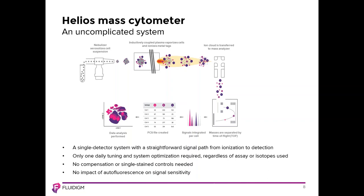Second, there is no impact of autofluorescence on signal sensitivity. Mass cytometry has nothing analogous to autofluorescence, since the metal isotopes used as tags do not occur naturally in biological systems. From a workflow standpoint, mass cytometry is considerably less complex than any high-parameter flow cytometric approach.